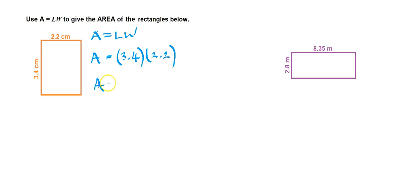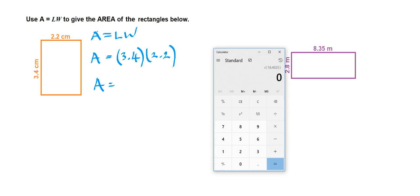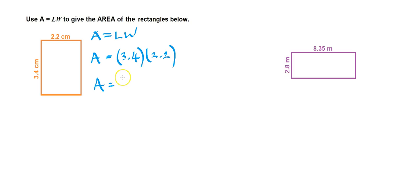Next step is to carry out this multiplication. So it's probably quite easy to use a calculator for this. So 3.4 times 2.2, 7.48. So 7.48 include the units of measurement. So we're using centimeters, and because it's area, it's squared.